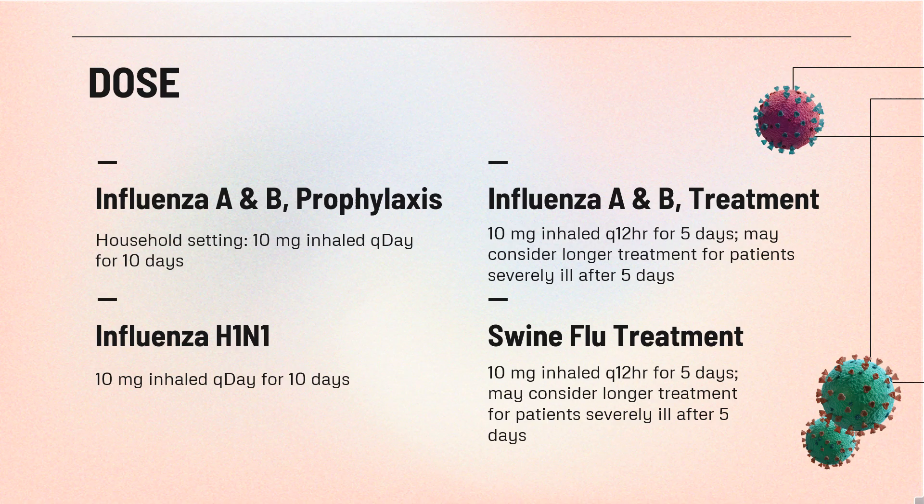Influenza H1N1 (swine flu) prophylaxis, off-label: 10 mg inhaled once daily for 10 days. Initiate within 7 days of exposure. Influenza H1N1 (swine flu) treatment, off-label: Start within 2 days of symptom onset. Administer 2 doses on day 1, at least 2 hours apart. 10 mg inhaled every 12 hours for 5 days. May consider longer treatment for patients severely ill after 5 days.